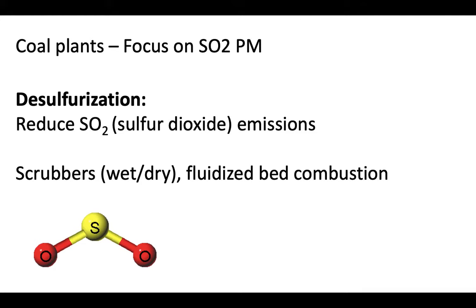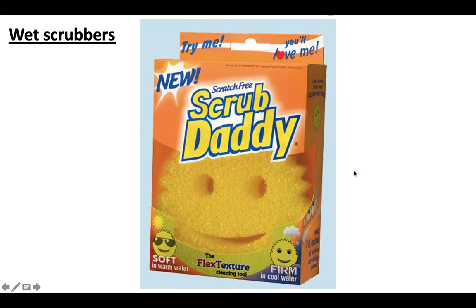The Clean Air Act put a cap and trade on SO2, so coal power plants are incentivized to reduce their SO2 emissions and particulate matter emissions. Some ways they can do that include desulfurization through technology known as scrubbers or fluidized bed combustion.